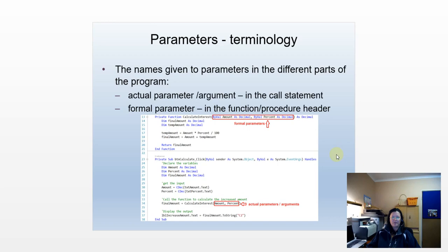Let's look at a few terms. Where we are calling the procedure or the function, we talk about parameters as being the actual parameters or arguments. When I use the term actual parameter or argument, it means the call statement. Formal parameters would be the parameters specified in the function or procedure header. There are two terms: formal parameters and actual parameters. And two ways of passing the parameters: either as value parameters or reference parameters.